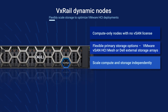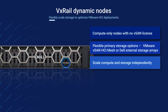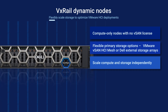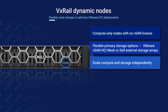External primary storage allows customers to scale compute by adding Dynamic Nodes independently of storage. More Dynamic Nodes can be added to existing clusters, or new clusters can be deployed to increase compute power, pulling storage from the same resource.